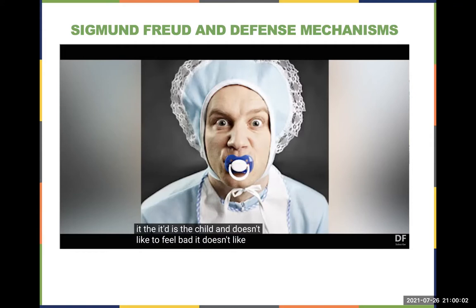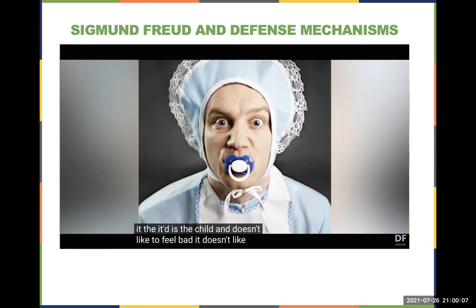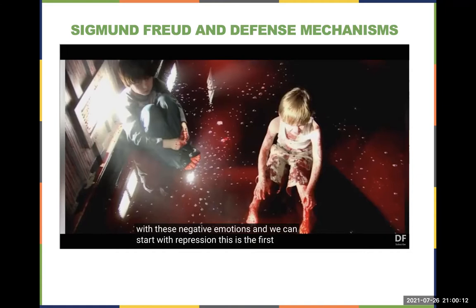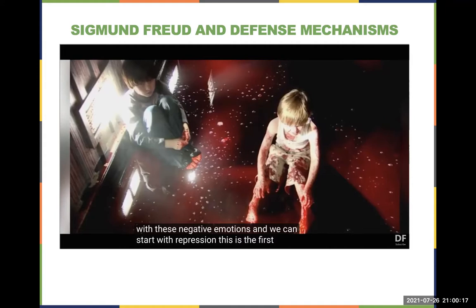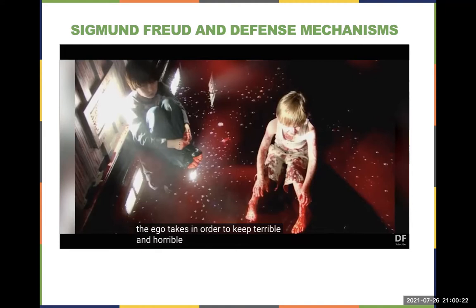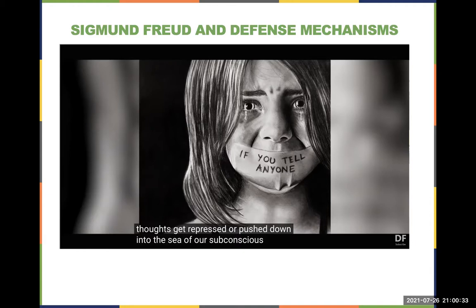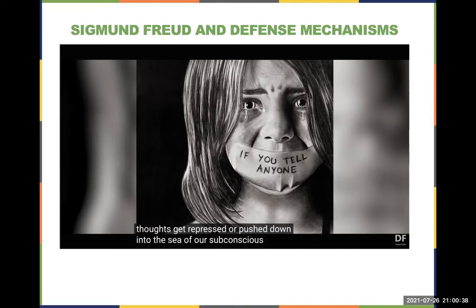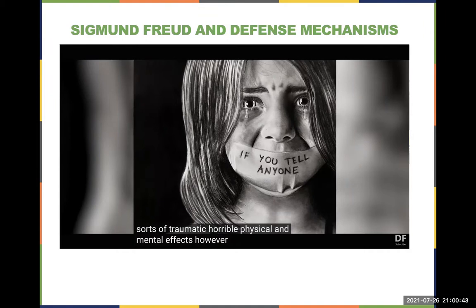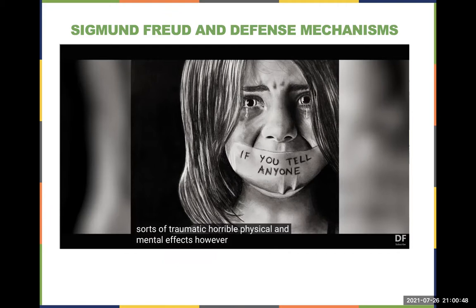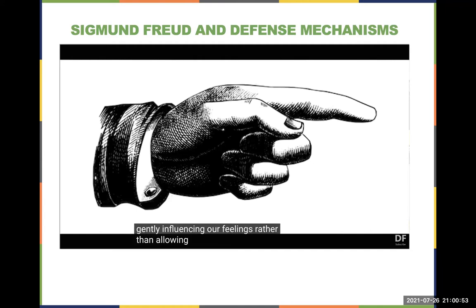Freud believed no one escaped childhood undamaged — the mind encounters things it can't cope with, so it uses defense mechanisms to pacify the id. Repression is the first and most important: an unconscious action the ego takes to keep disturbing thoughts from becoming conscious. These repressed thoughts remain hidden in the subconscious but still gently influence feelings, even if we can't remember the events themselves.